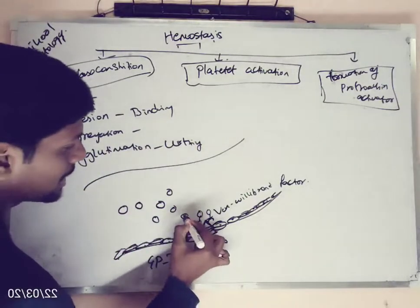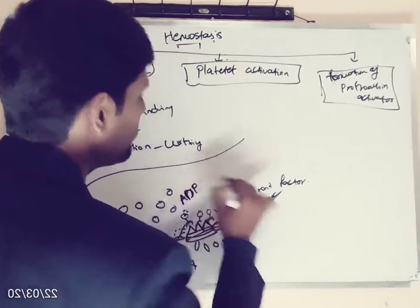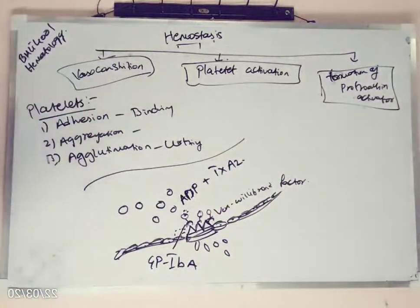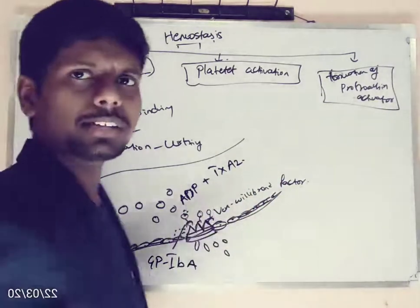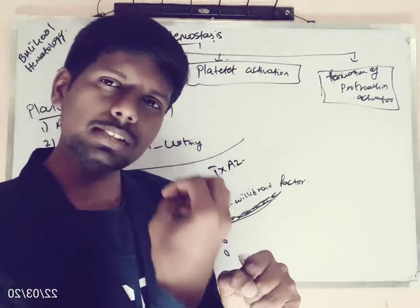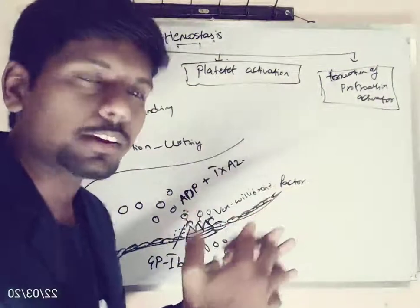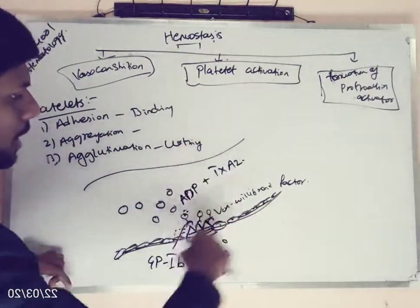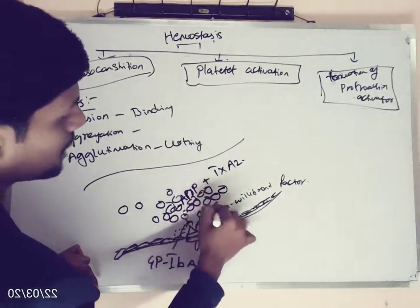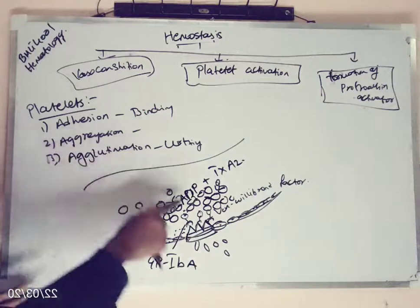After this, these platelets will get activated and they will secrete two important substances: ADP (adenosine diphosphate) and thromboxane A2. ADP and thromboxane A2 are cell signaling messengers. Once these chemicals are released into the blood, they will call all other platelets to the site of injury — like an alarm signal. Immediately after releasing these two chemicals, all platelets will start binding to the site of injury and start aggregation.